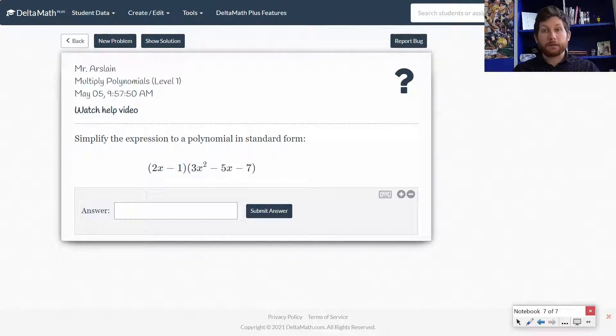FOIL works fine as long as you're dealing with two binomials. But if you think of it in terms of distribution, I need to take all the terms in this first polynomial and distribute them to all the different terms in the second polynomial. That's the way we want to think about it.